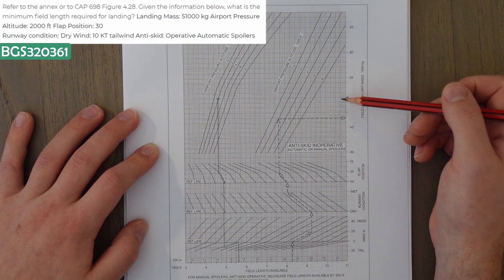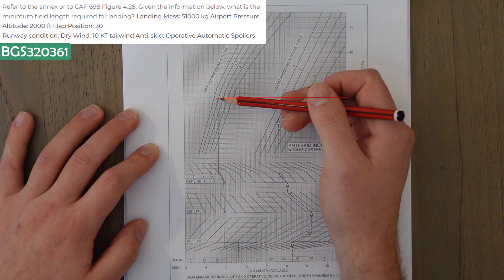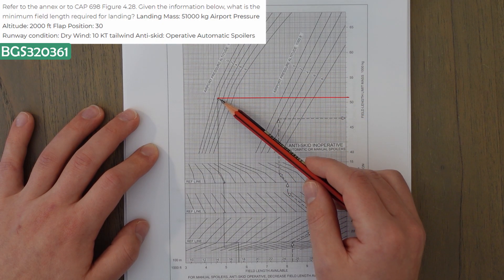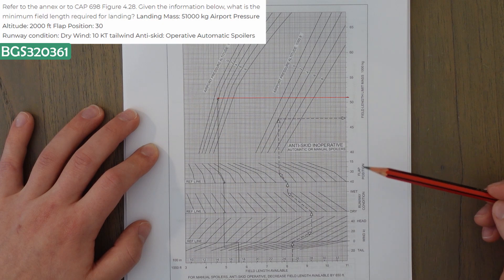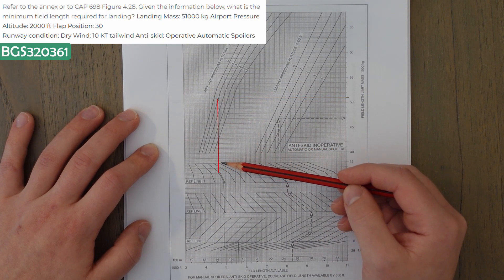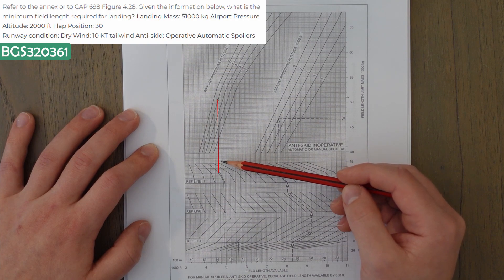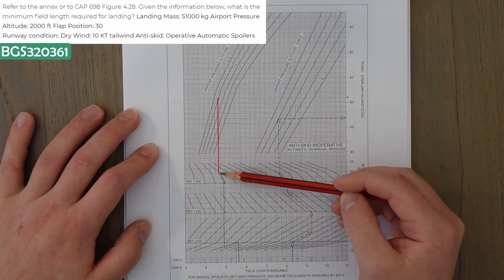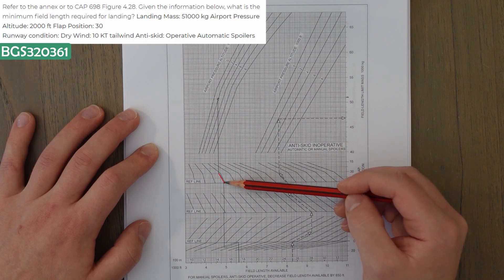So anyway, we've got 51,000. Take that line all the way across until reaching 2,000 here. We then take the 2,000 straight down until we enter the flap position correction. So we take that down to the flap 30 position, which is this first kink in the line. We follow the guideline down to the reference line, and we stop.